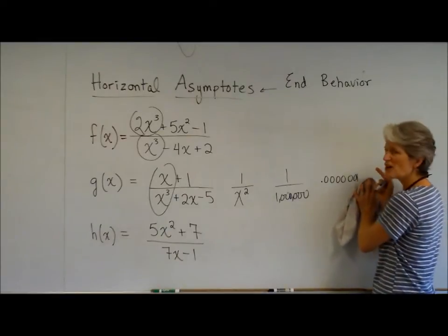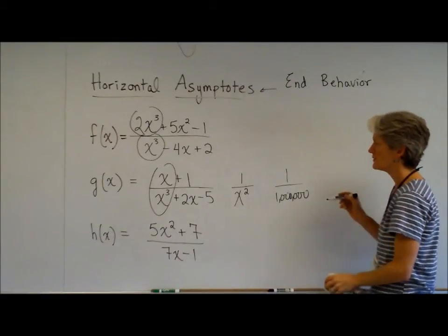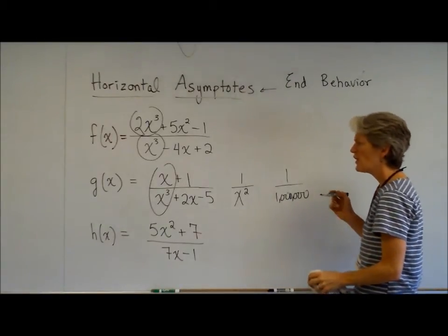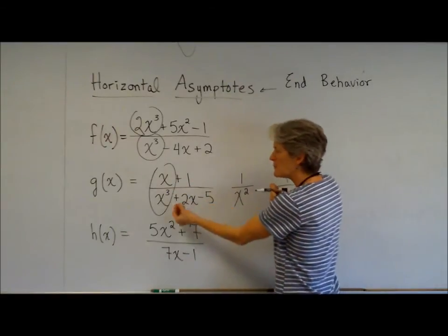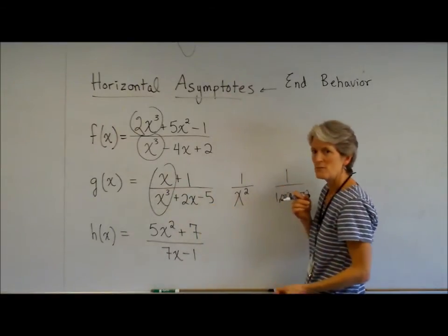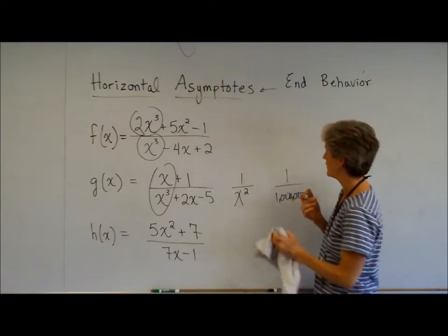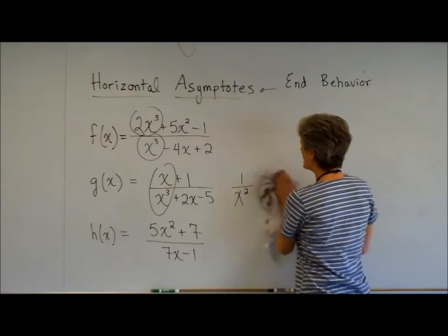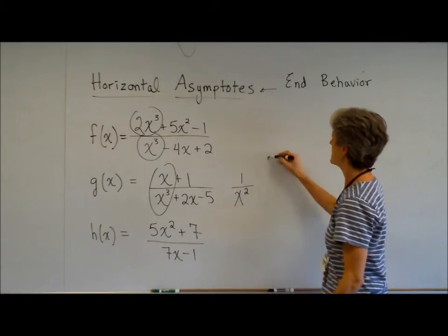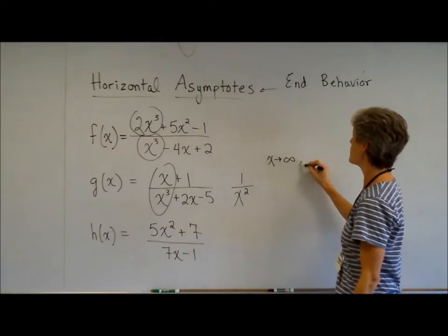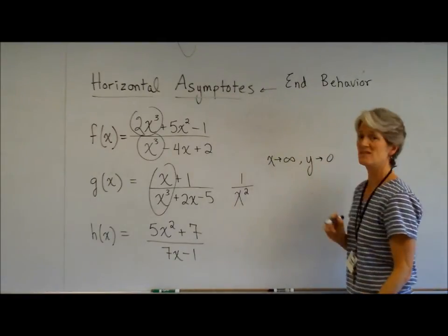That's pretty darn close to zero. So if I'm getting this right, if I'm plugging in a big number, my Y value is getting pretty close to zero. It is. So can I say that my end behavior, as X approaches infinity, my Y is really getting close to zero?